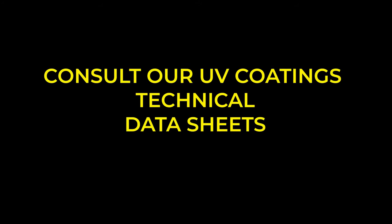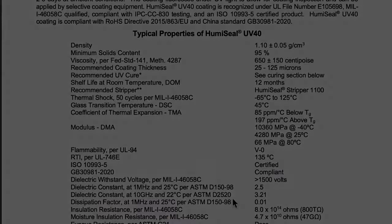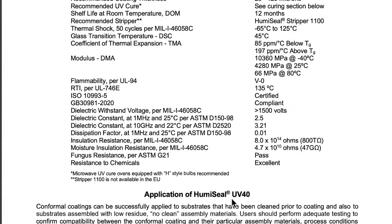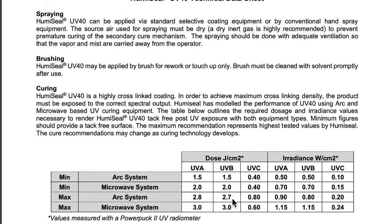To optimize the conveyor speed, first look at the technical data sheet for the HumiSeal UV product you are using. This will give you the dose and irradiance levels required to cure the product.